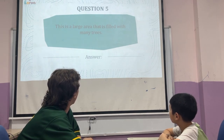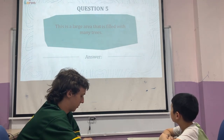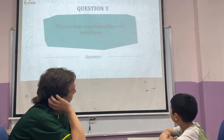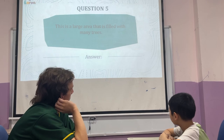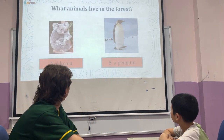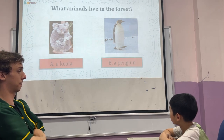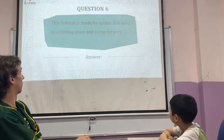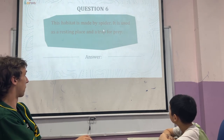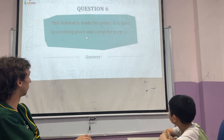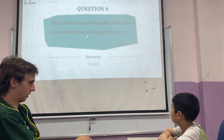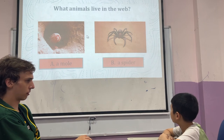Number five. This is a large area with many trees. A forest. And what animal lives in the forest? A koala. A koala. Last question. This habitat is made by a spider. It is used as a resting place and a trap for prey. A web. What animal lives in the web? A spider.